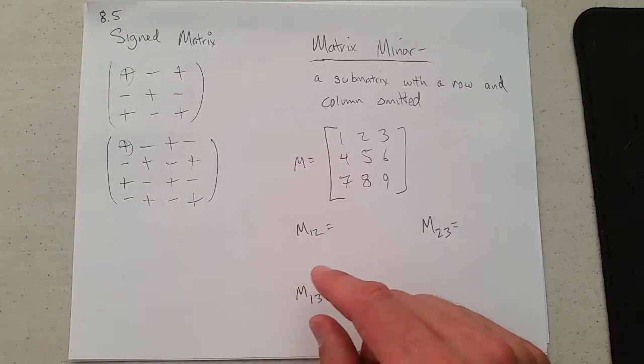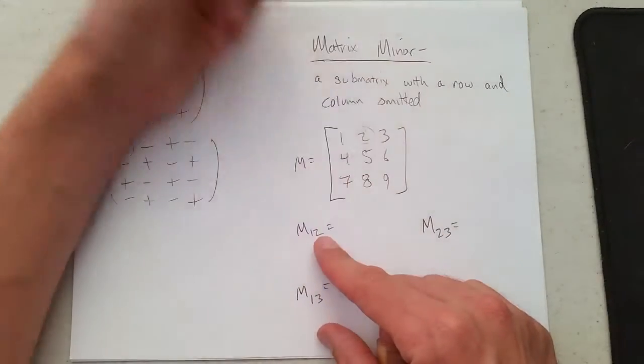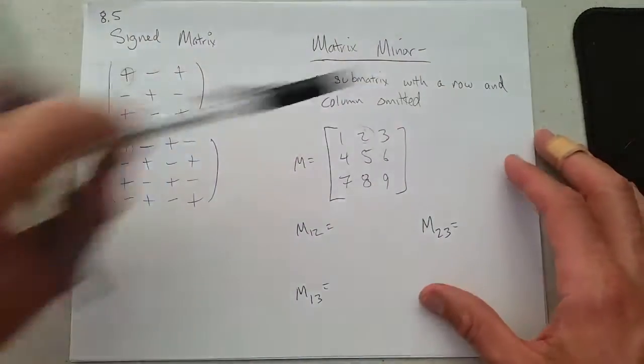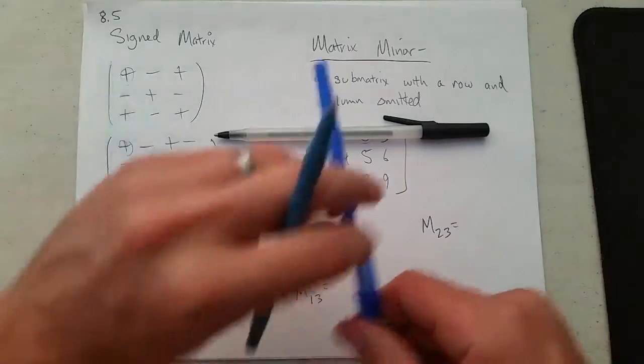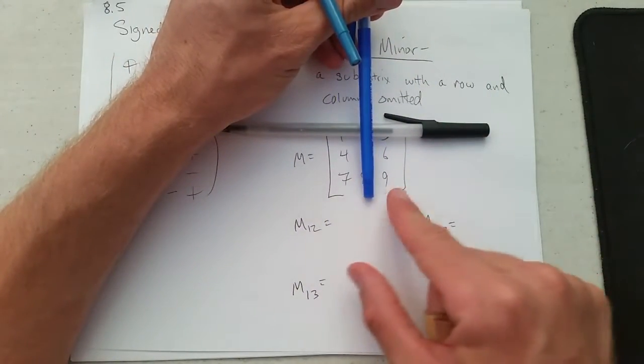So where's M1,2? That is the minor at row 1, column 2. Row 1, column 2 is right there. You want to remove row 1 and remove column 2. So what are we left with? 4, 6, 7, 9.